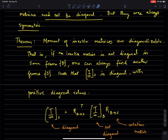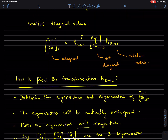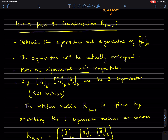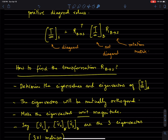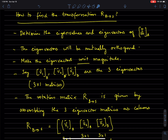This is the standard diagonalization procedure from linear algebra. Diagonalization involves computing the eigenvalues and eigenvectors of the matrix you want to diagonalize. The eigenvectors, for this particular matrix — the moment of inertia matrix — will be mutually orthogonal. Eigenvectors are not, in general, mutually orthogonal, but for a moment of inertia matrix, because it is a symmetric matrix, eigenvectors will be mutually orthogonal. For any symmetric matrix, eigenvectors are mutually orthogonal.